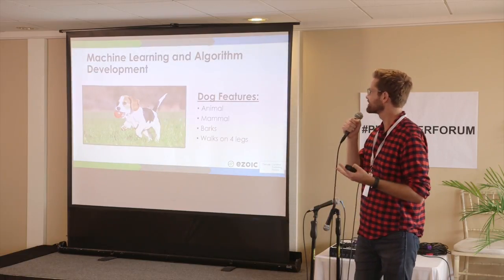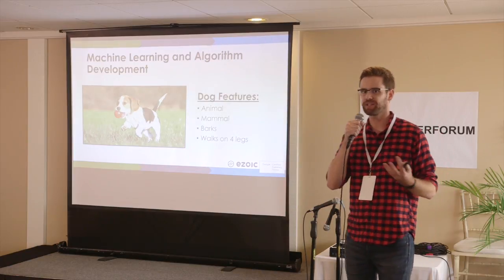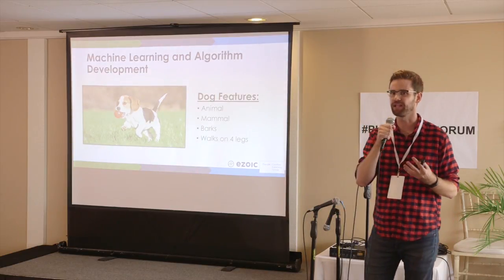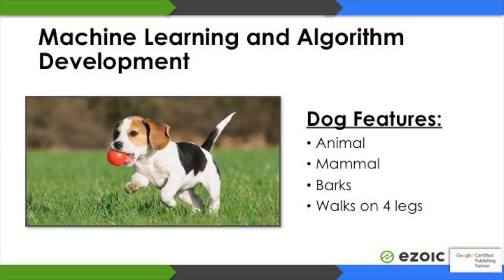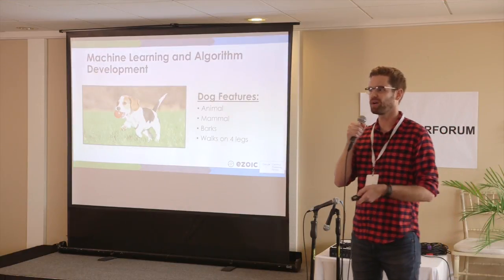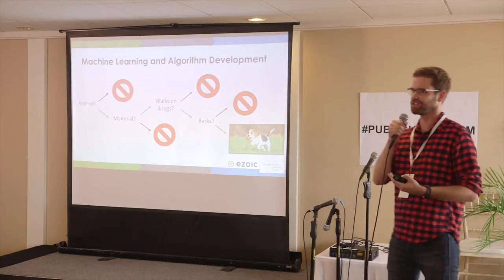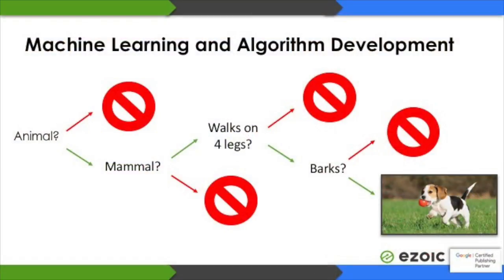Data science is a bigger concept than just equations on a chart — it's about machine learning and algorithm development. We can predict more complicated things, like: is this a dog? To make an algorithm for that, I can describe features of a dog: it's an animal, it's a mammal, it barks, and it walks on four legs. We can plug this into a decision tree, which is essentially a game of 20 questions: Is it an animal? Yes. Is it a mammal? Yes. Does it walk on four legs? Yes. Does it bark? Yes — it's a dog. At any 'no,' we stop and say it's not a dog.